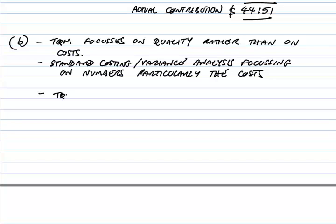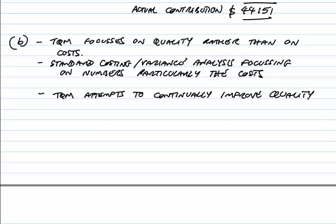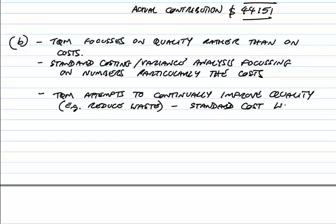TQM attempts to continually improve quality. Appreciate that quality isn't just producing what you might call perfect goods — there's quality in the way we work, for example reducing waste. And as a result of that, the standard cost would keep changing. In a sense there is no standard cost because hopefully we're forever improving things.